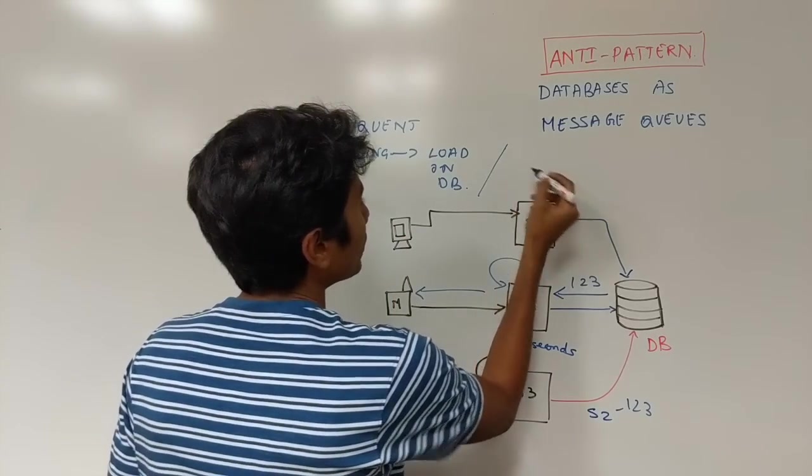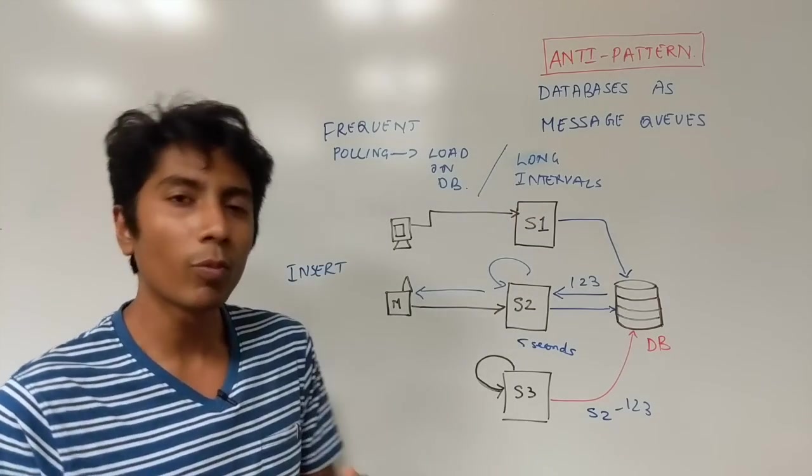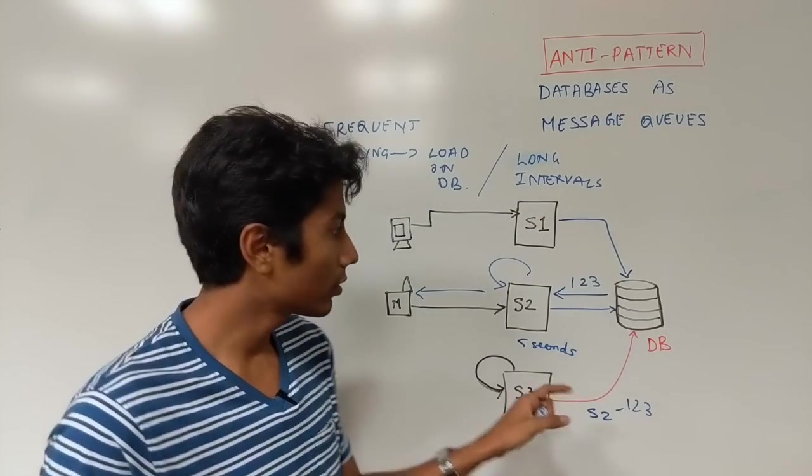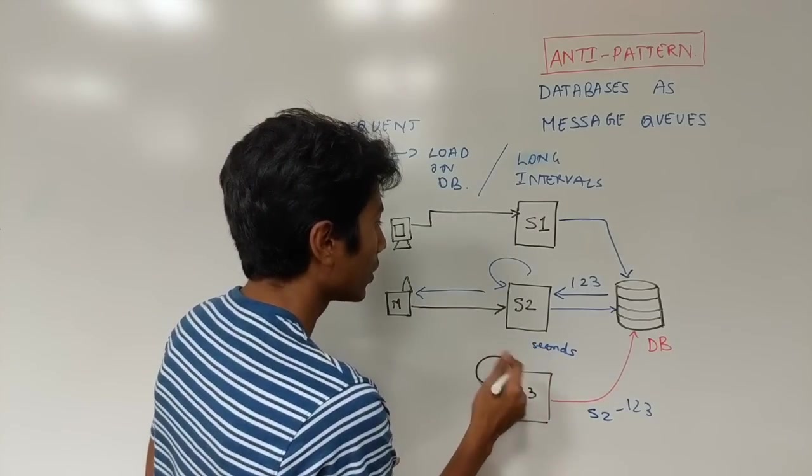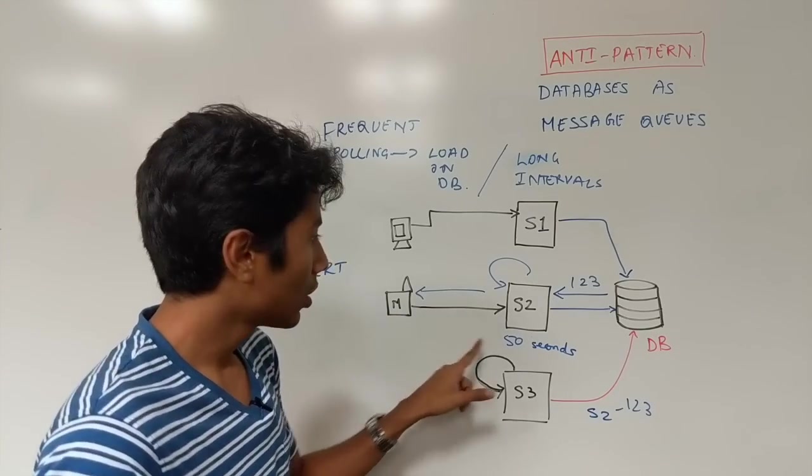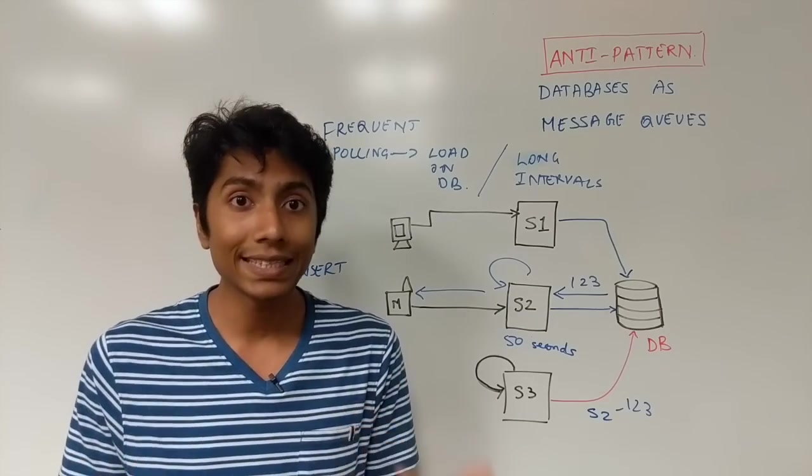The other side of the coin is long intervals. If you poll at long intervals, well then maybe S2 needed the message quickly, and because it has a long interval of 50 seconds, the mobile should have got the message in the first 2 or 3 seconds, that's the expectation. But instead it took it a full 50 seconds.